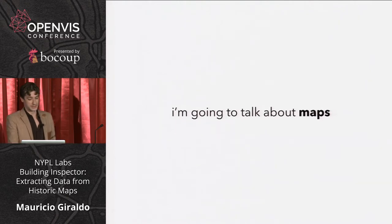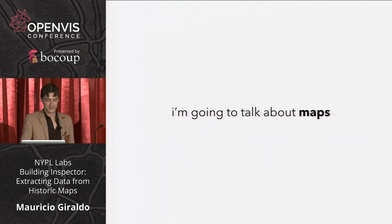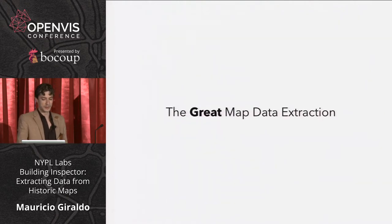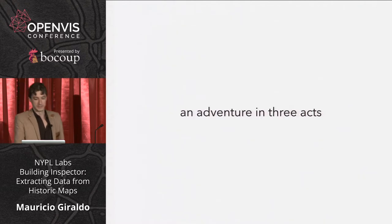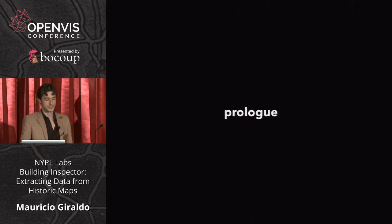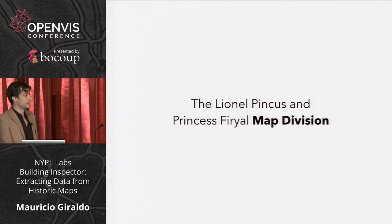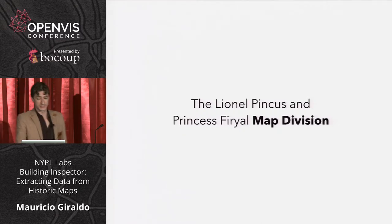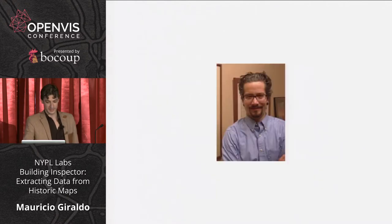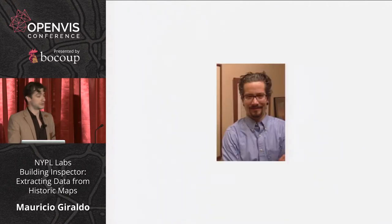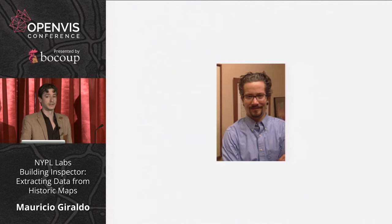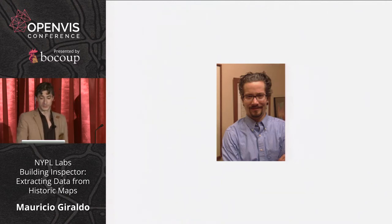I'm going to talk about maps, more specifically about the great map data extraction and adventure in three acts. But first, a prologue. We're in the Lionel Pincus and Princess Ferial Map Division in the New York Public Library, headed by Matt Knudsen. He's the geospatial librarian of the New York Public Library — that's not the most awesome job title, I don't know what is.